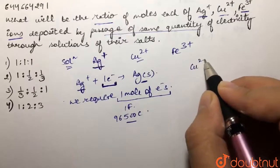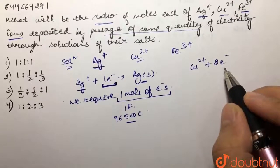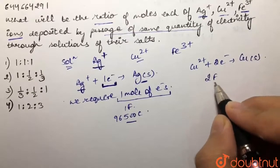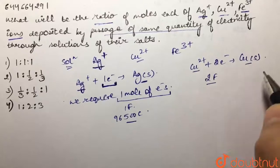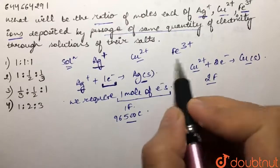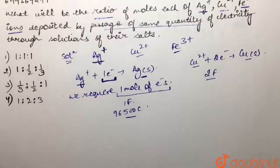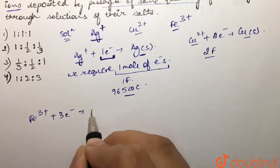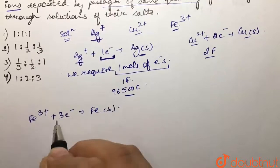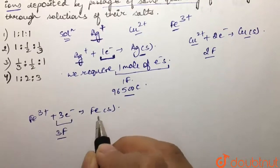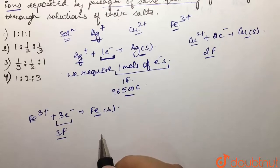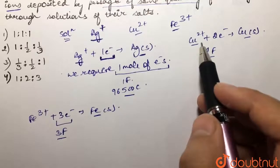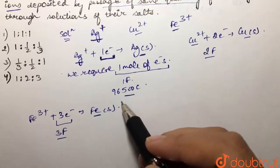In the case of copper 2 positive, it is going to require two electrons to form solid copper, so two Faradays of electricity would be required. For iron 3 positive ion, we are going to require three electrons to form solid iron, so three Faradays of electricity is required for one mole deposition of solid iron.